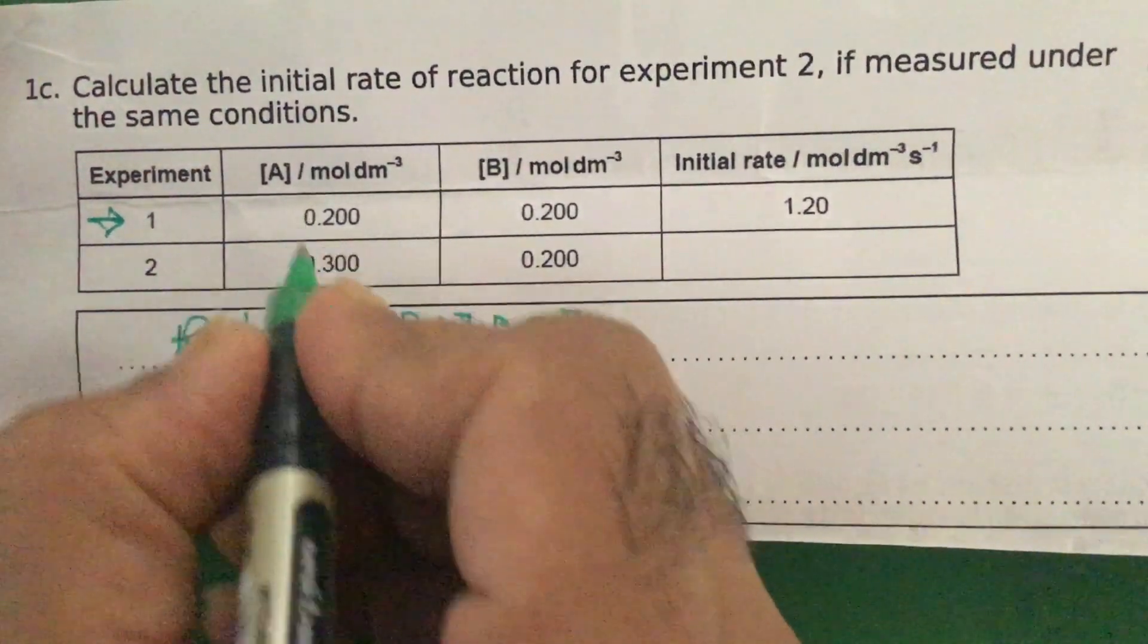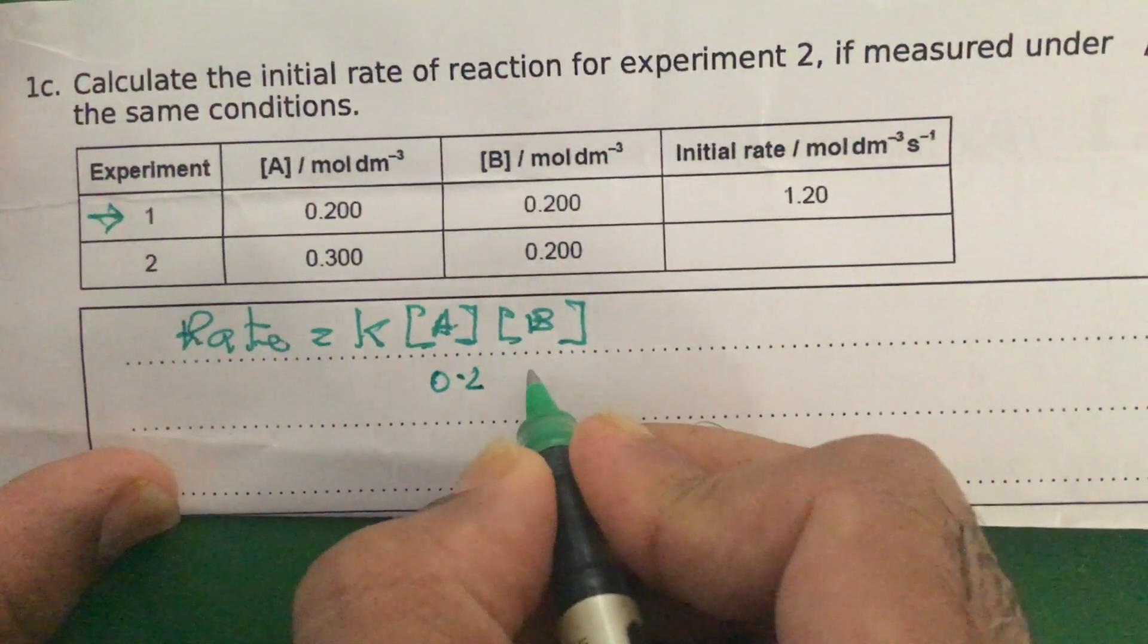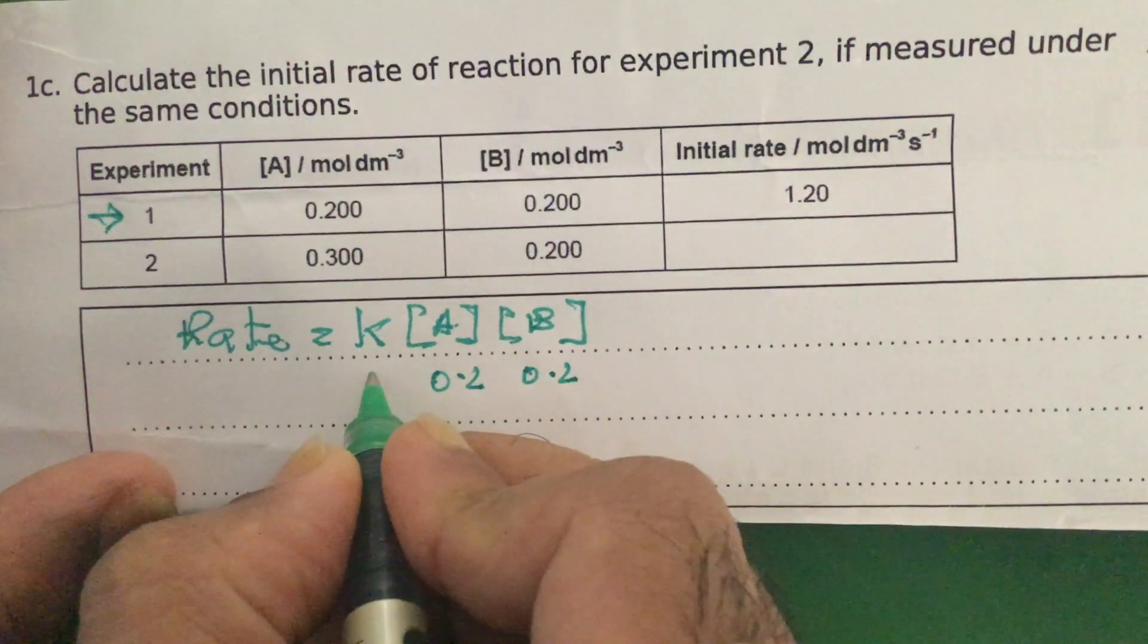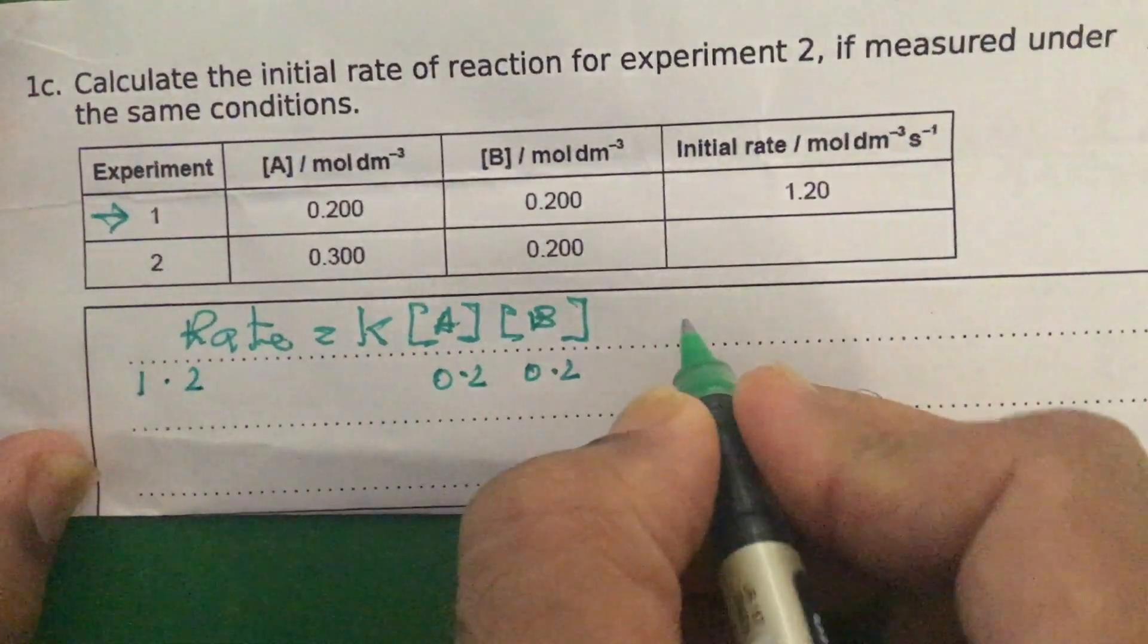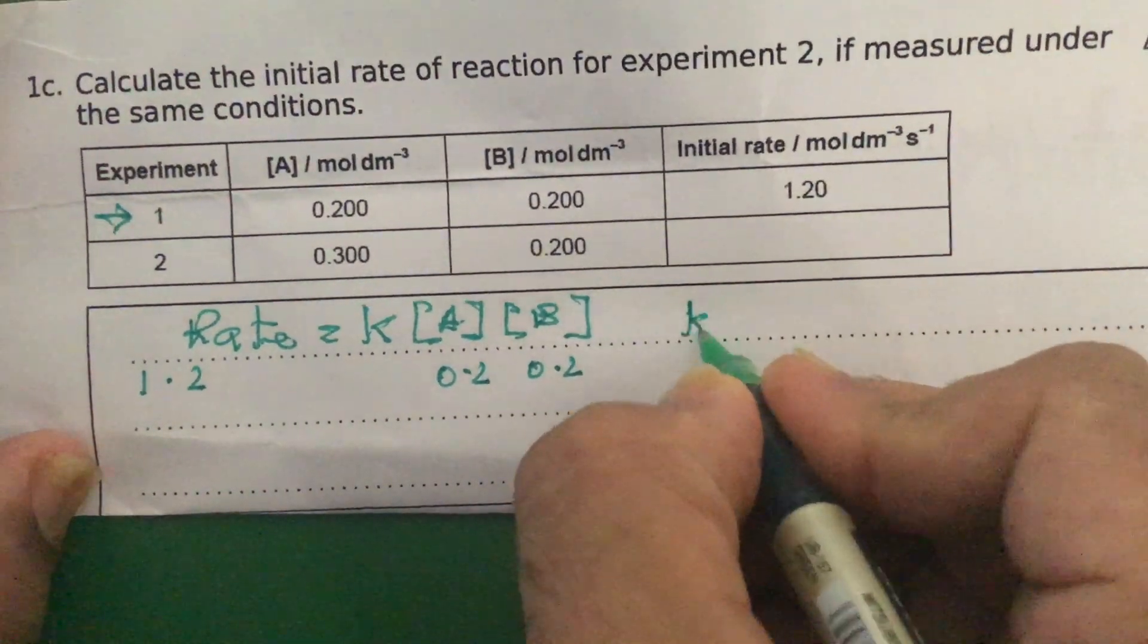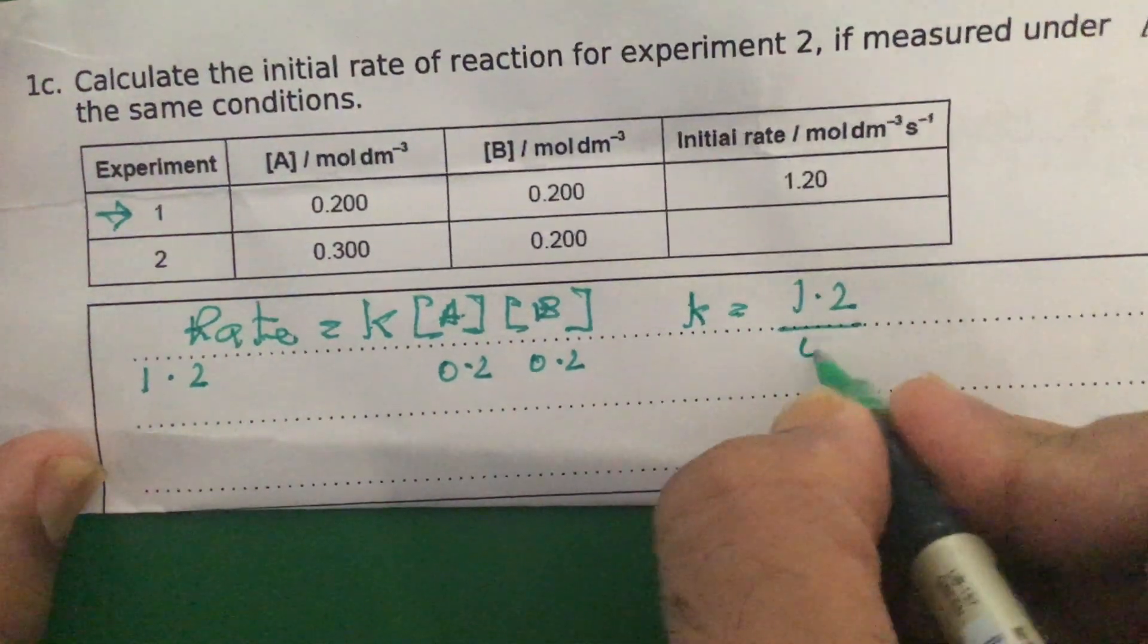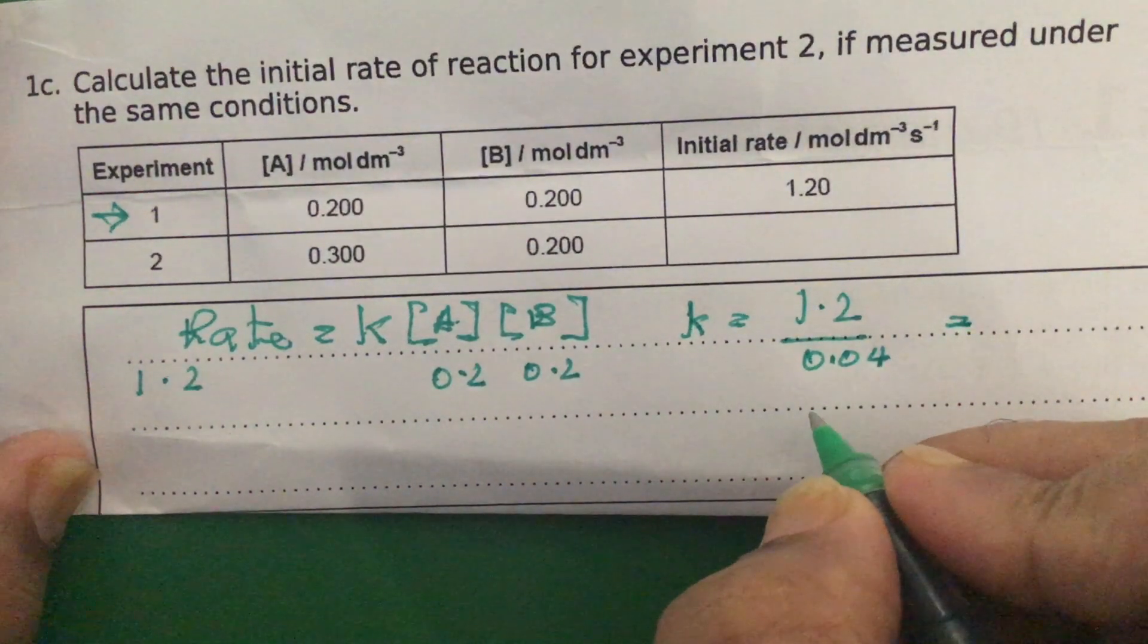which means 0.2 goes here and another 0.2 goes here. And then we can solve for k because we're also given the rate, the rate of 1.2. So k will be equal to 1.2 divided by 0.04, and that would